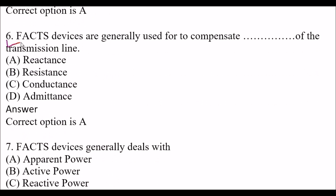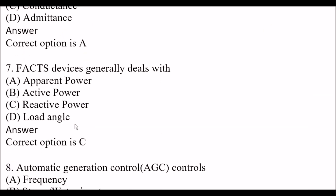Next question: FACTS devices are generally used to compensate the blank of the transmission line. Option A: Reactance. Option B: Resistance. Option C: Conductance. Option D: Admittance. The right answer is Option A, Reactance. FACTS devices are generally used to compensate the reactance of the transmission line. Next question: FACTS devices generally deal with — Option C: Reactive Power — is the right answer.